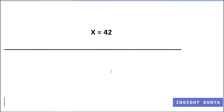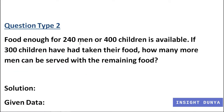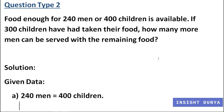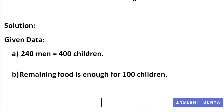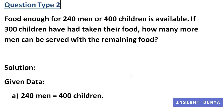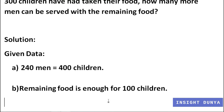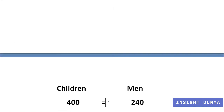Question type 2: food enough for 240 men or 400 children is available. If 300 children have already taken their food, how many more men can be served with the remaining food? This is a special kind of chain rule question. The data tells us: 240 men equals 400 children, and the remaining food is enough for 100 children, because out of 400 children, 300 have already eaten.